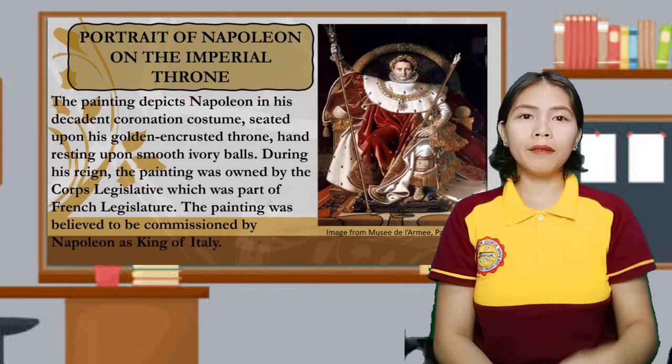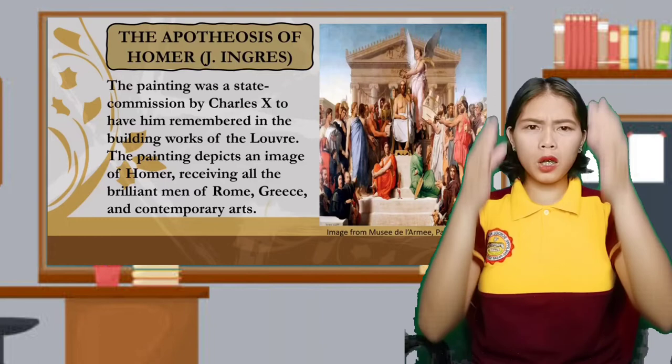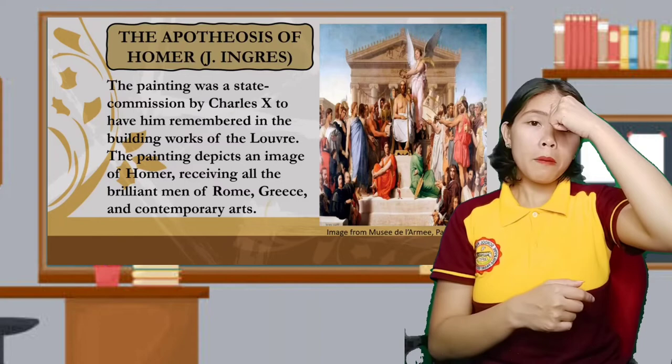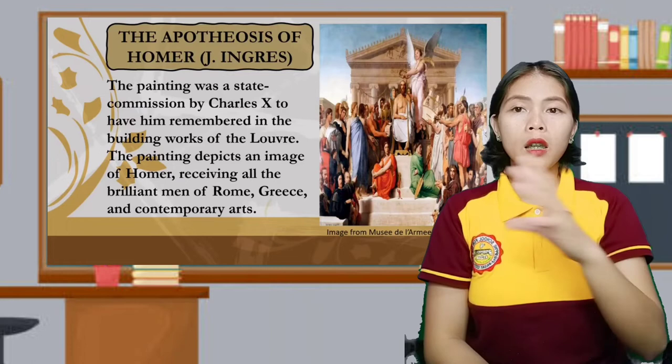Next is the Apotheosis of Homer. This painting was state-commissioned by Charles X, who had it remembered in the building works of the Louvre. The painting depicts Homer receiving all the brilliant men of Rome, Greece, and contemporary arts.